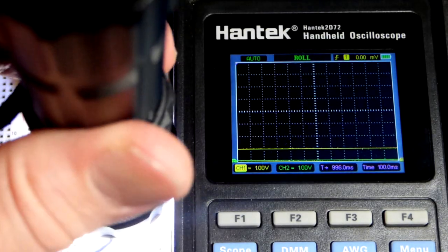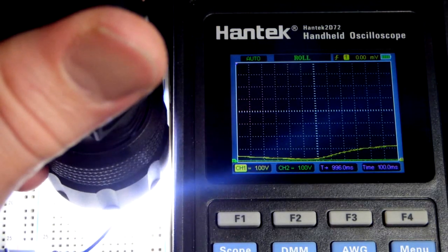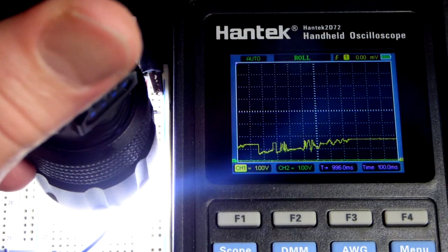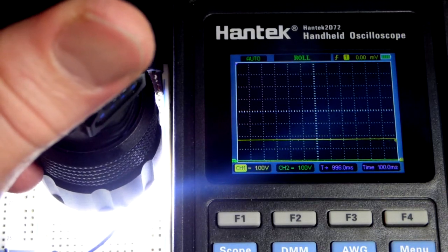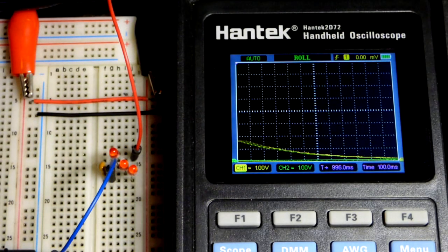And there you can see when I get a light on them, we can get looks like maybe a volt and a half—there you go, almost two volts right there if we get the light on them correctly.